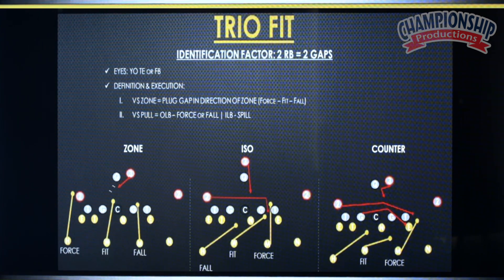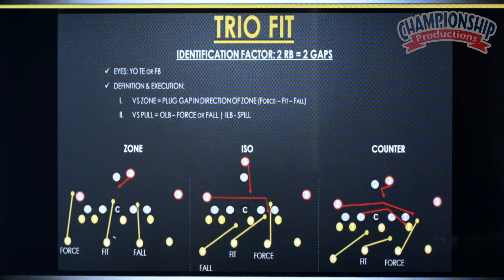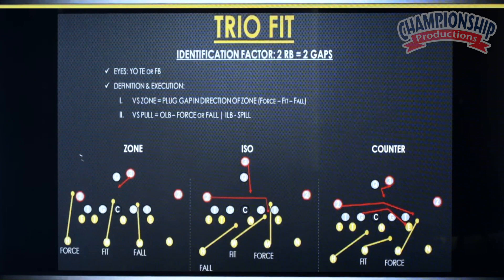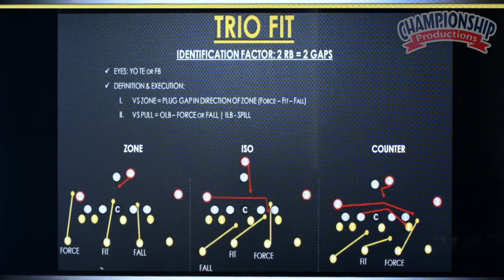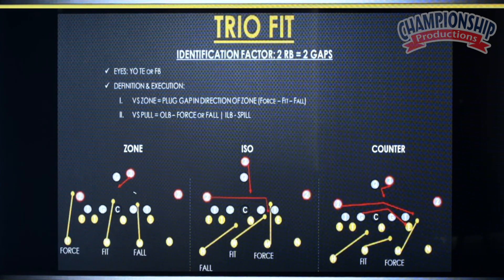Bottom left picture, we're getting zone. No gaps have moved. It ultimately looks like a plug fit. We have a force defender here — he's going to fit outside of that yo tight end. Our fit player and our Will is going to play his A gap. Our fall player and our Mike is going to play his B gap.